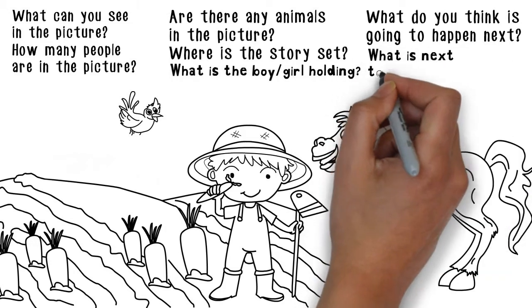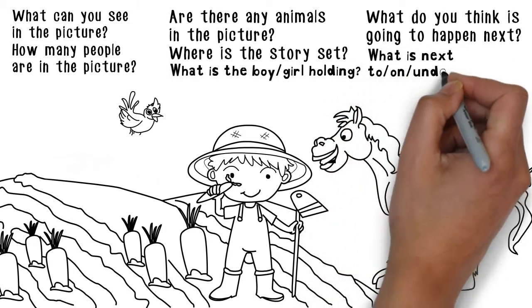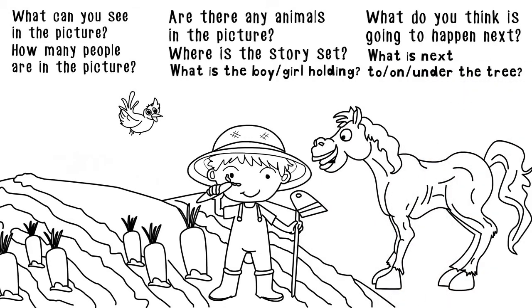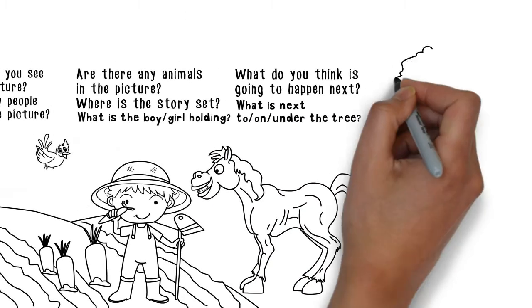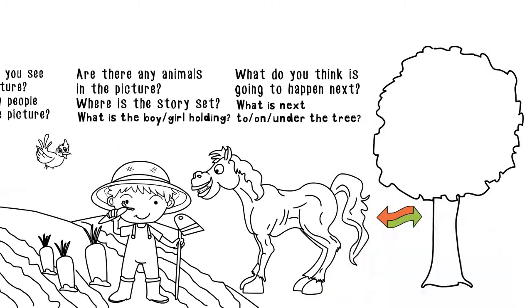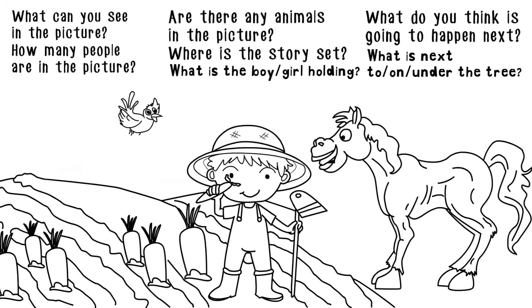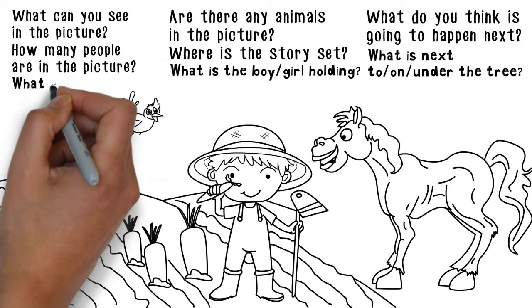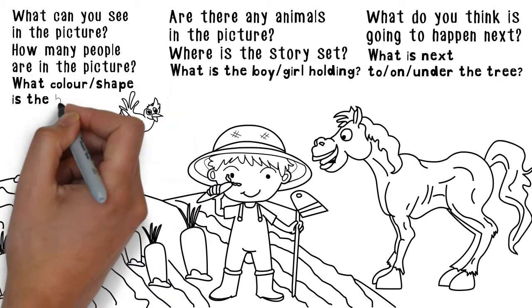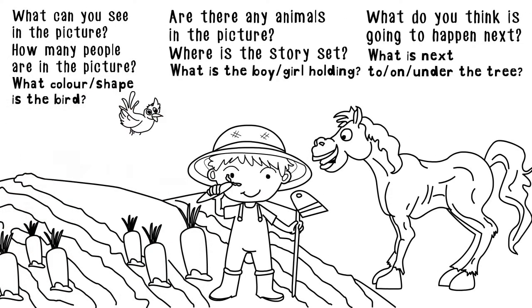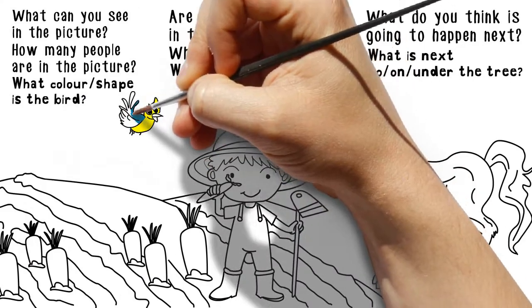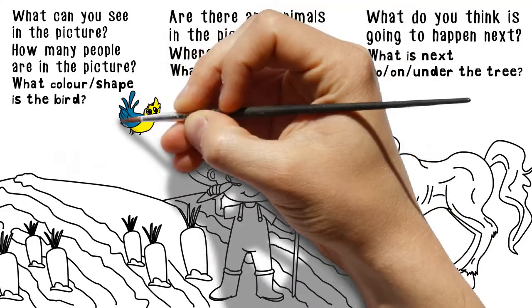What is next to, on, or under the tree? The horse is next to the tree. What color or shape is the bird? The bird is blue and yellow.